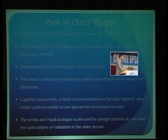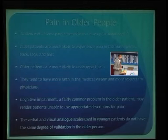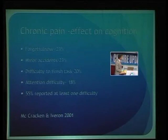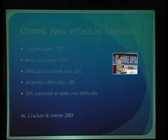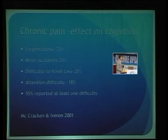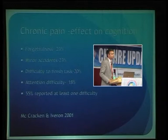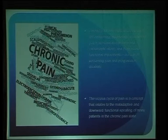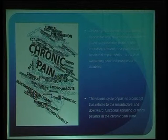Cognitive impairment blunts the way patients manifest and talk about pain — be mindful of this, especially in patients with dementia, where different assessment tools are needed. A study published in 2001 shows pain affects different aspects of cognition: it makes patients more forgetful, more prone to minor accidents, and causes difficulty finishing tasks and attention difficulties. More than half of patients experience some form of cognitive impairment because of chronic pain.